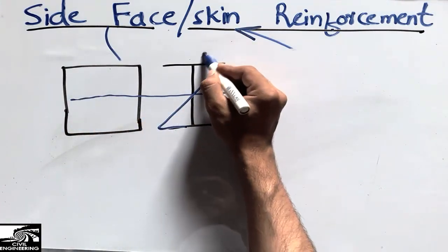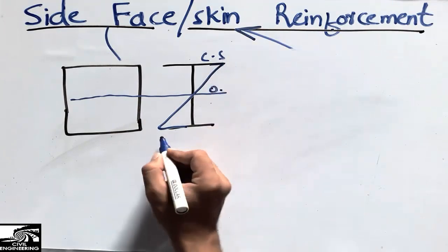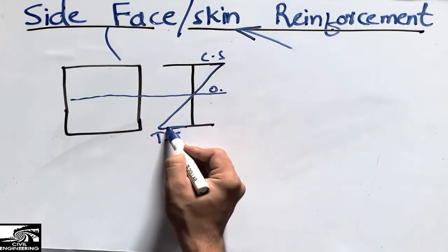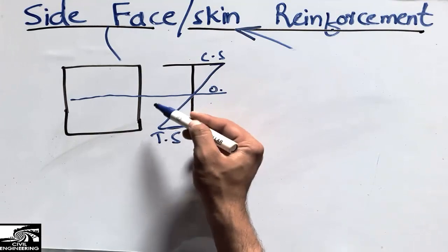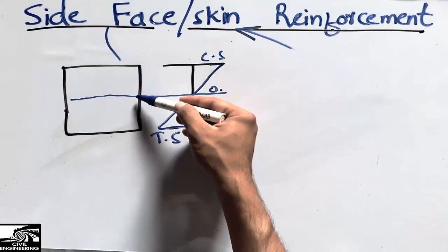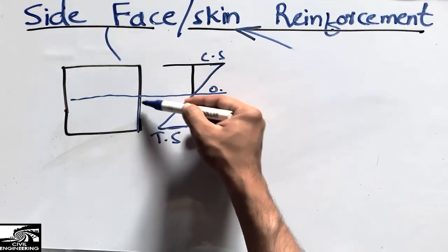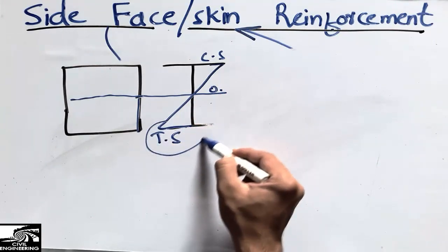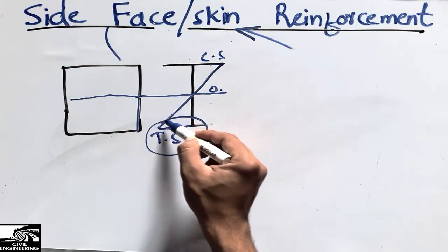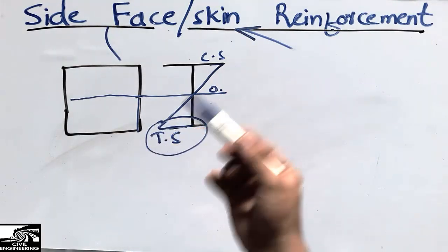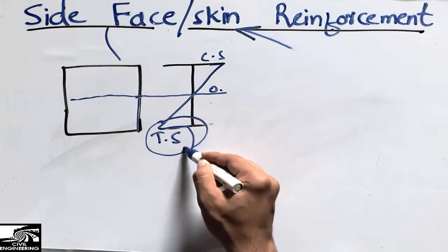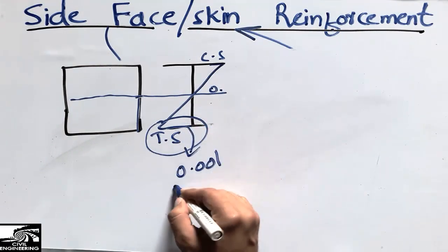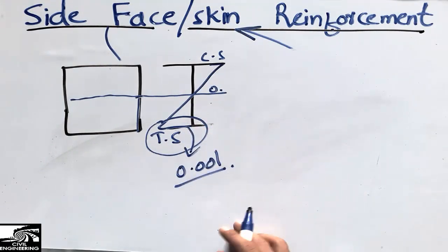In a shallow beam, there is compressive strain above the neutral axis and tensile strain below it. The tensile strain is very small — it does not exceed the code limit, which I believe is 0.001 for concrete beams. So it does not exceed the tensile strain capacity, and no side face reinforcement is needed.